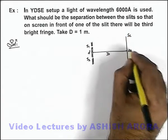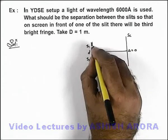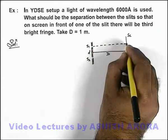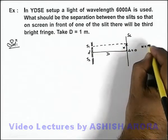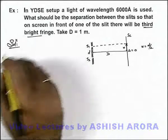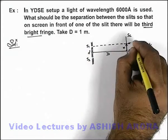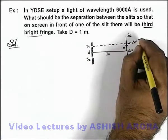We know that at screen center path difference is zero, and here it is saying in front of one of the slits where the separation x is equal to d by 2, there is a third bright fringe. That means at this point the path difference delta must be equal to 3 lambda.